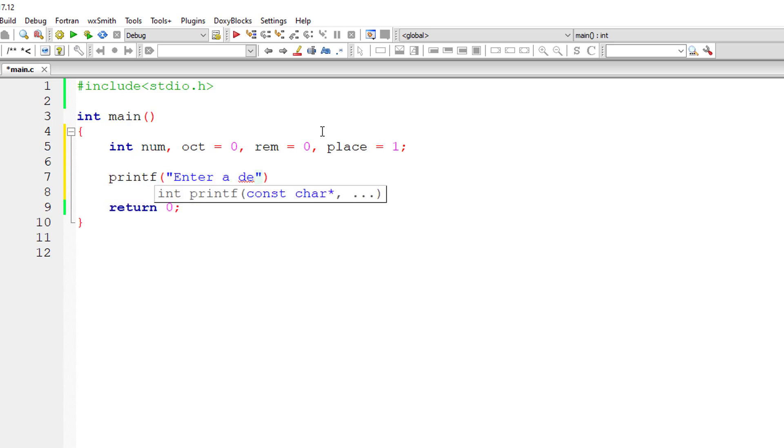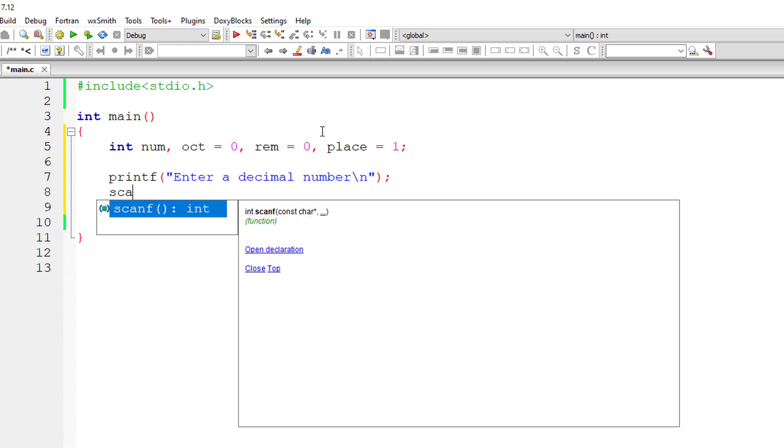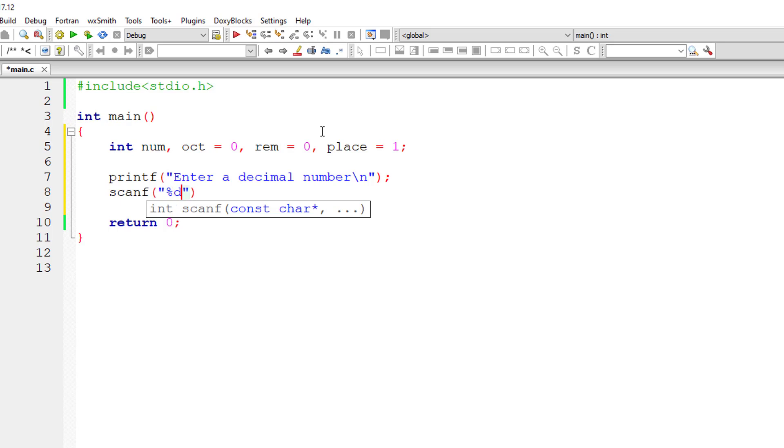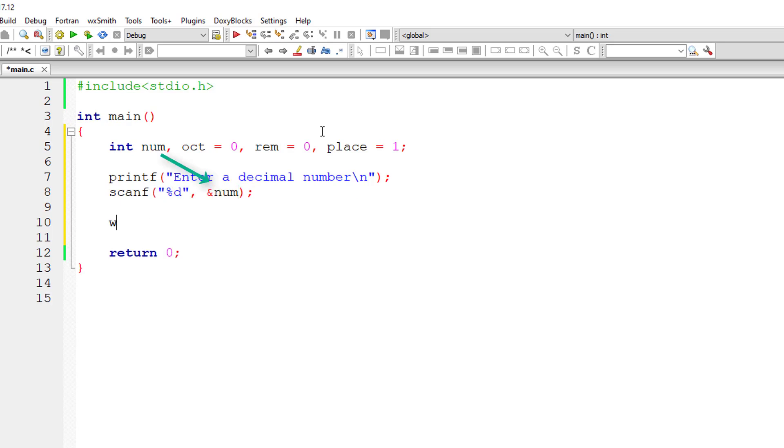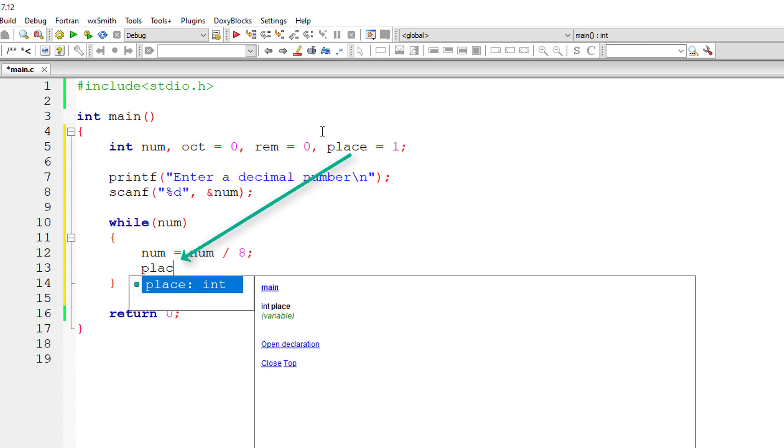So I'll ask the user to enter a decimal number. Remember, decimal number means it has base 10, so 0 to 9 digits. So I'll store that value inside the address of variable num. While this num is not equal to 0, so we can just write while num, I'll reduce this number. That is, num equals num divided by 8, because we are converting it to octal.